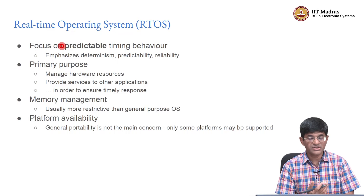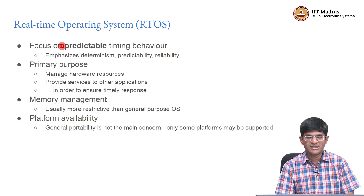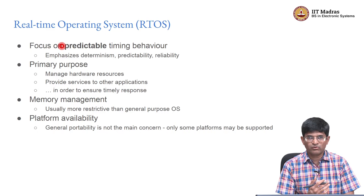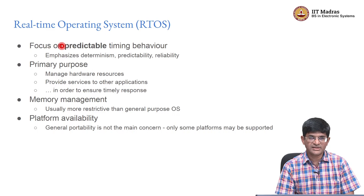Determinism is something that a regular operating system may not guarantee. In a general OS, there could be scenarios where depending on the order in which a mouse click and a key press occur, you could end up with different behaviors. What the RTOS requires is some way of guaranteeing these properties in the majority of cases, and if it is not possible to guarantee them, at least it should be clear to the designer or developer what can possibly go wrong.